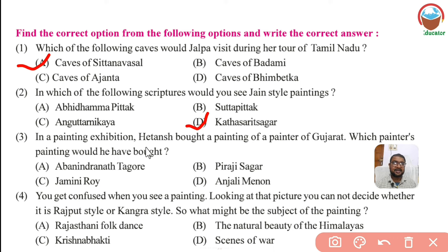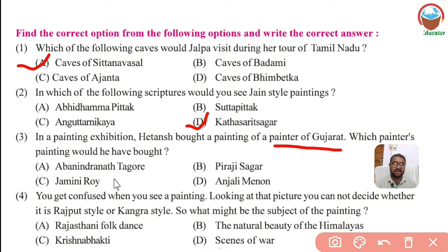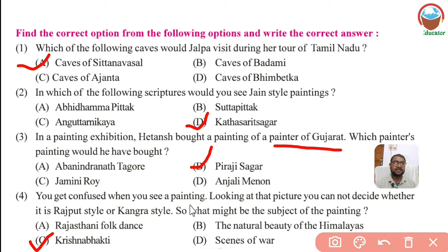Third MCQ: at a painting exhibition, Hathans bought paintings of painters from Gujarat — which painter's painting would he have bought? Options include Abhinindranath Tagore and Piraji Sagara. The correct answer is B — Piraji Sagara, who is a painter of Gujarat. Fourth MCQ: if you are confused looking at a painting and cannot decide whether it is Rajput or Kangra style, the common similarity — Krishna Bhakti — is found in both.